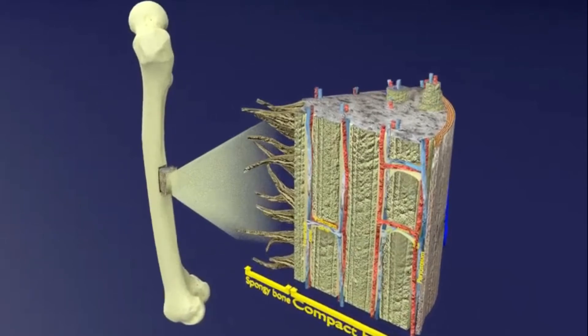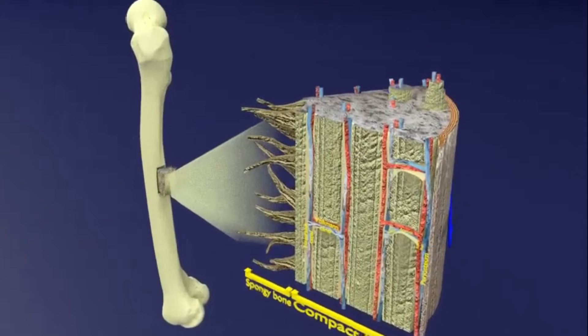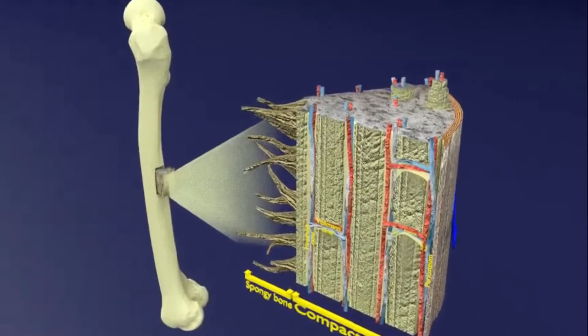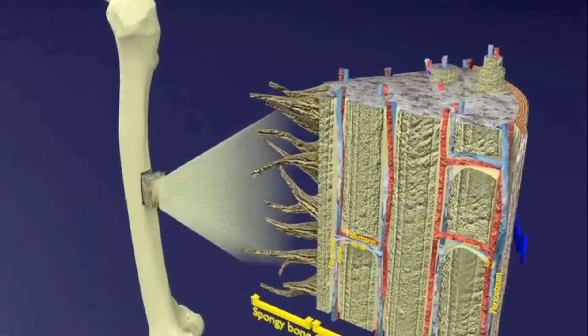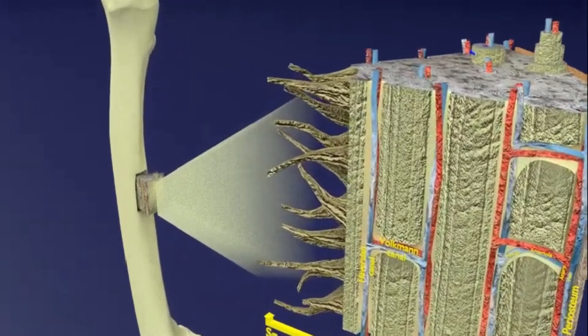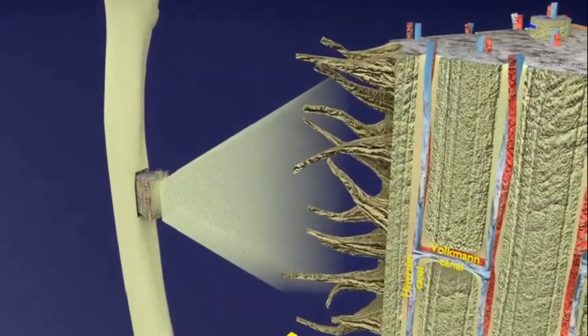Similarly, the examples of flat bones are scapula and the skull bones. Sesamoid bones like patella and pisiform are formed due to ossifications within the tendons.